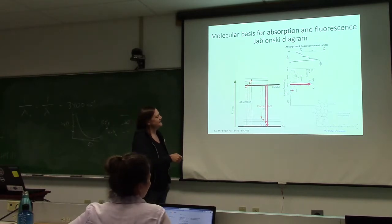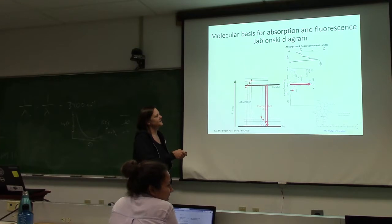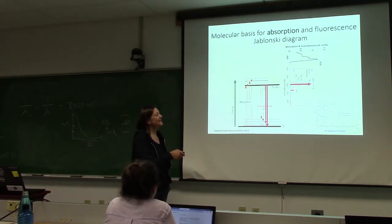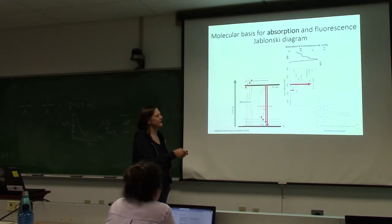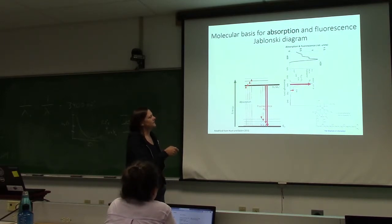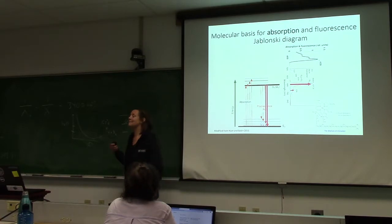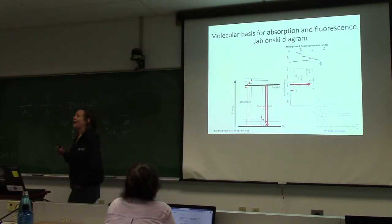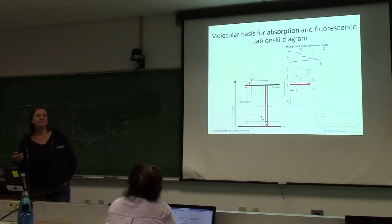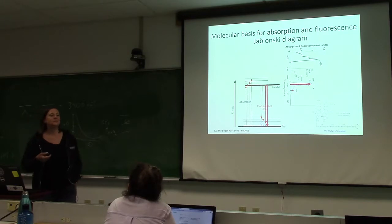If you see de-excitation to the higher vibrational level, that's associated with a little bit lower energy — that's this peak out here. As you have vibrational levels in absorption, you have vibrational levels in re-emission. That's why you tend to get a mirror image of fluorescence emission compared to absorption — just some fun physics.